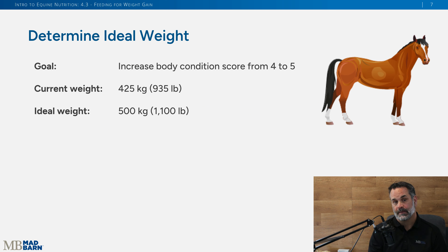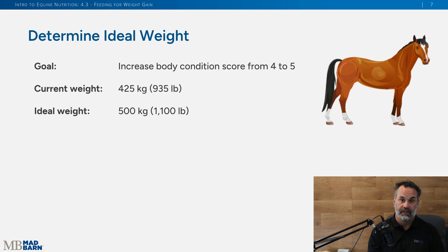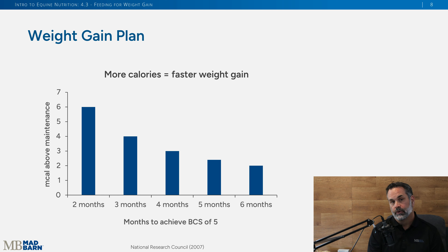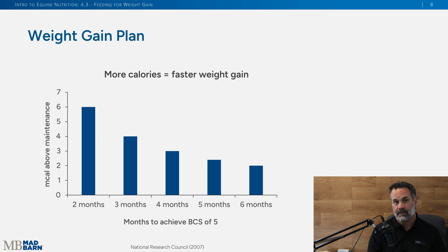That leads into step two: what's your goal, and how quickly do you want this horse to gain weight? You're going to formulate a plan on how to get them to reach this goal. For example in this discussion, we're going to take a horse from a body condition score of four to five — their ideal weight being a 500-kilogram, 1,100-pound horse. We can do this over a period of months.